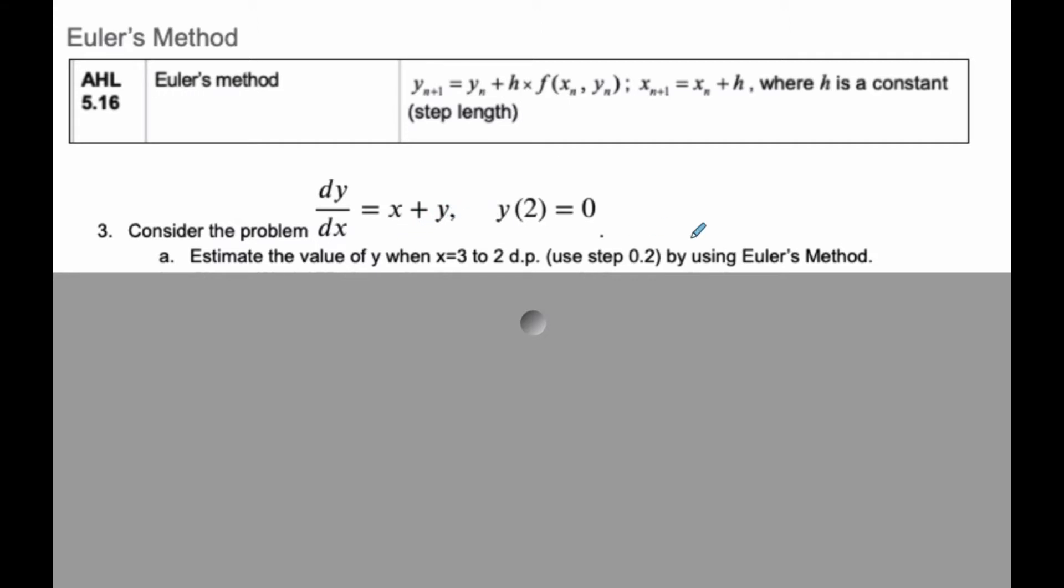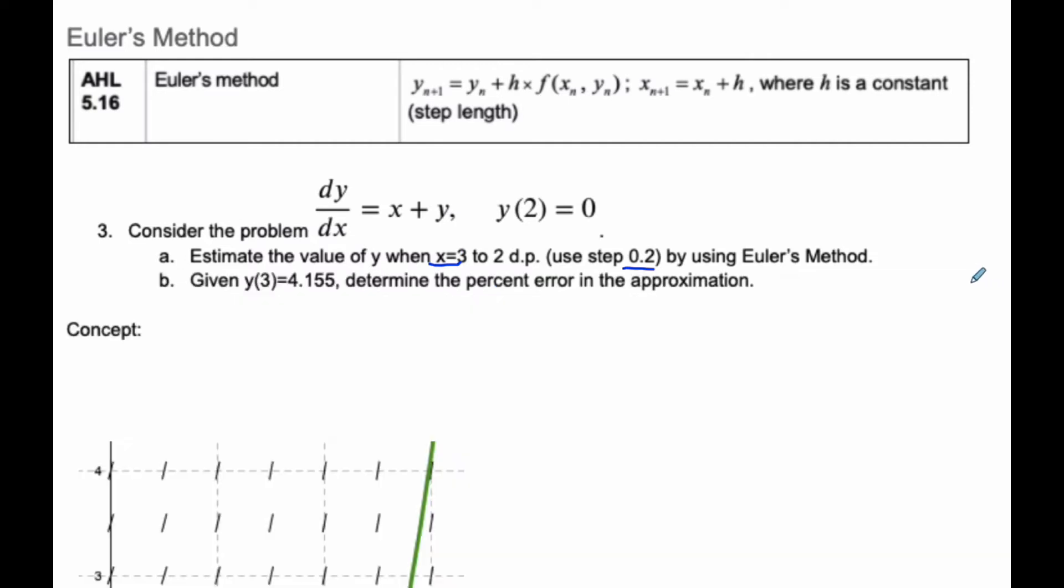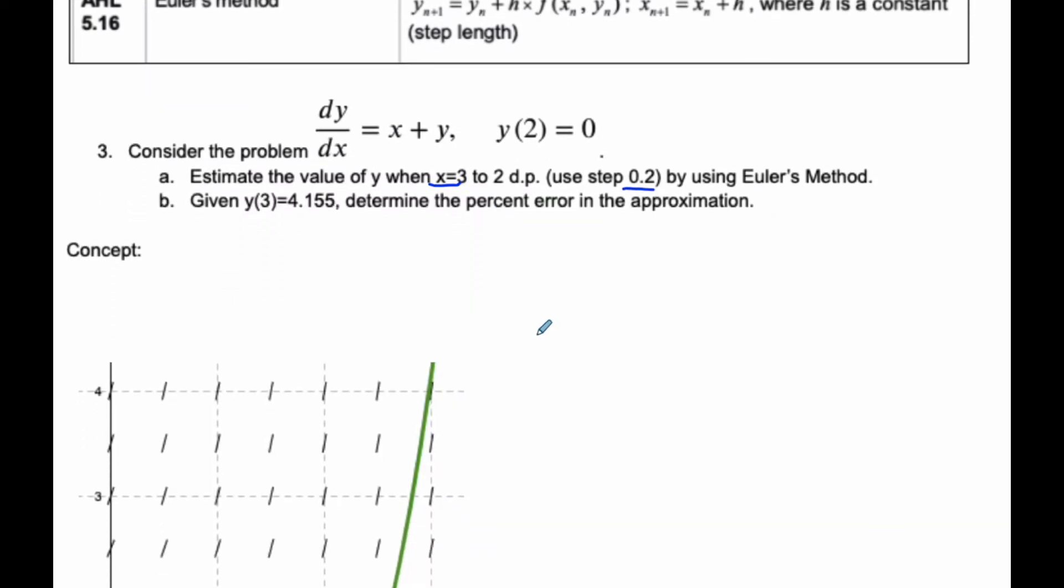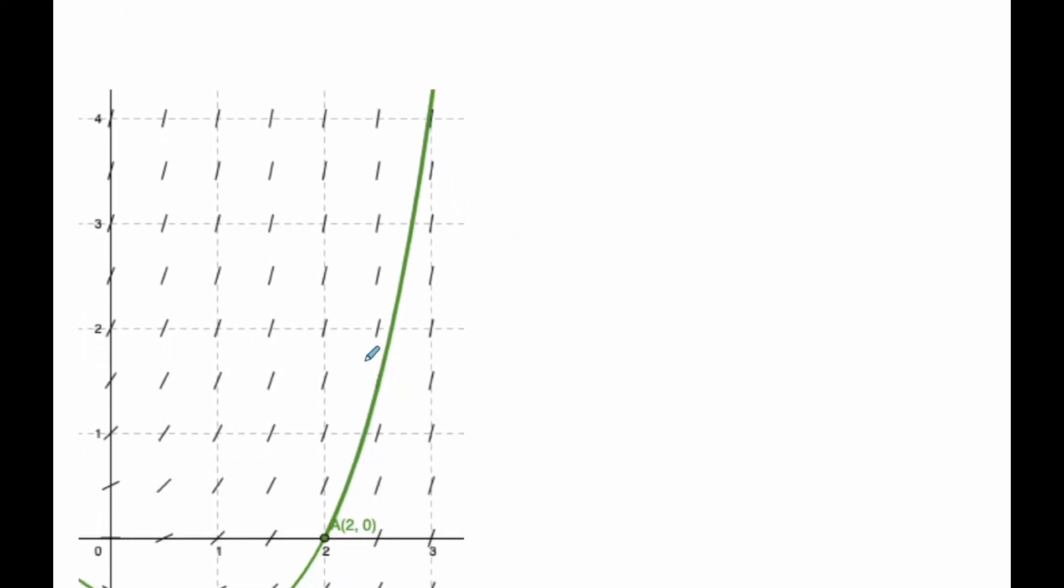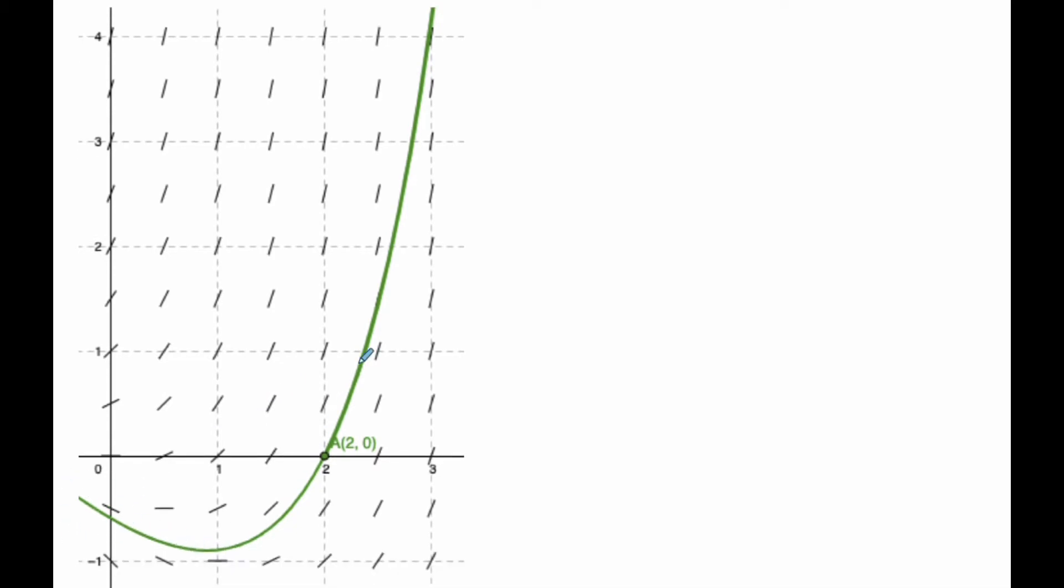We're going to go through the Euler's method process using a step of 0.2, and we're going to try to find when x equals 3. Euler was able to sketch the solution curve to the differential equation and make the slope fields. He could see the value when x equals 3 would be 4 point something, but his technique gets even better.